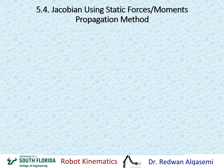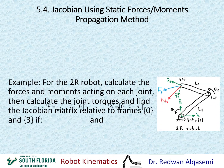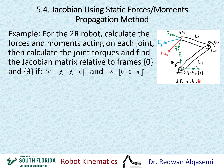Let's take an example on how to find the Jacobian using the static forces and moments propagation method. We'll take the classic 2R robot that has two links, L1 and L2, and two joints, theta1 and theta2. We have assigned frames 0, 1, 2, and 3. On frame 3, we have two general forces: F3 relative to frame 3 and N3 relative to frame 3.